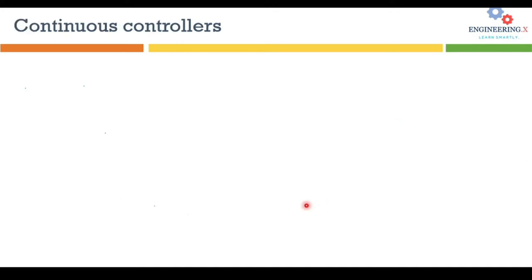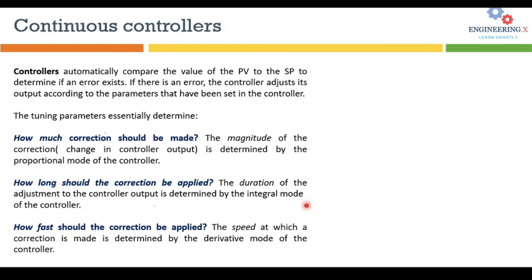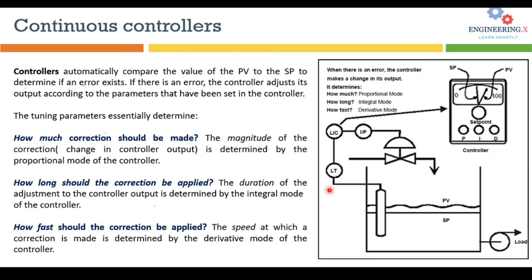The third type is continuous controllers, the example being PID controllers. These are automatic controllers that continuously compare the process variable to the set point to determine if an error exists. Error is the difference between the process variable and the set point. If there is an error, the controller takes action until the error is completely eliminated.